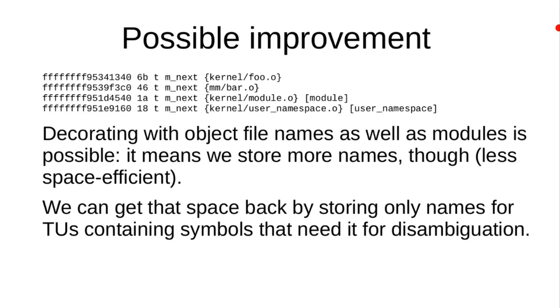What other use cases do we have in the kernel to disambiguate? It's mostly tracing. But LSMs also have things that look through and decorate symbols — and we also have complexities with LSMs doing bypassing, so reliable lookups could be useful there too.